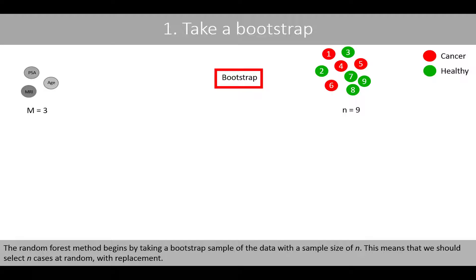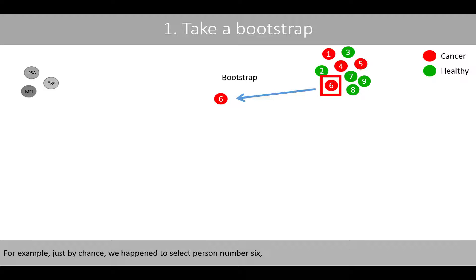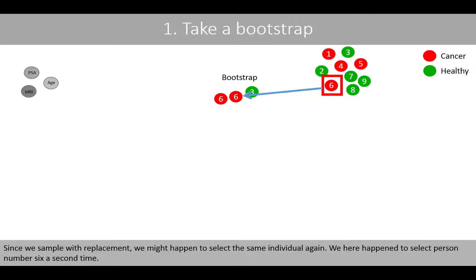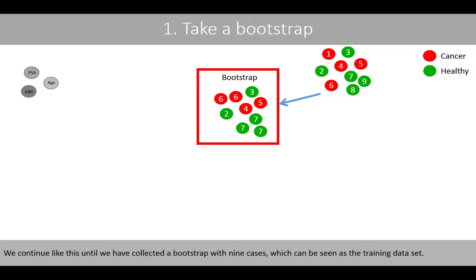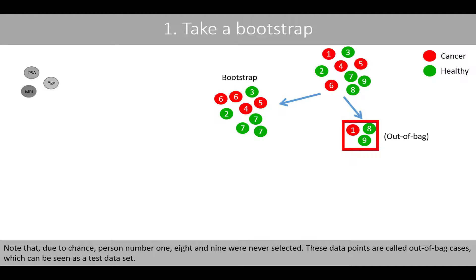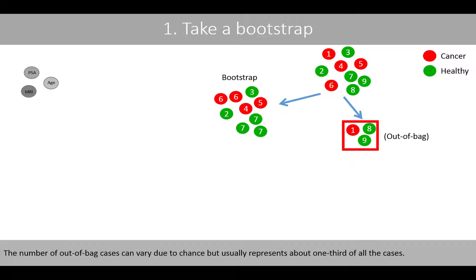The random forest begins by taking a bootstrap sample of the data with sample size n, meaning we select n cases at random with replacement. For example, by chance we select person number 6, then person number 3. Since we sample with replacement, we might select the same individual again — here we happen to select person number 6 a second time. We continue until we have collected a bootstrap of 9 cases, which serves as a training dataset. Due to chance, person number 1, 8, and 9 were never selected. These data points are called out-of-bag cases, which can be seen as a test dataset. The number of out-of-bag cases varies due to chance but usually represents about one-third of all cases.